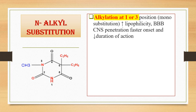First is the N-alkyl substitution. This means substituting the N1 or N3 position in the barbiturate structure with a small alkyl radical such as methyl. Once we substitute these N sites with a methyl group, it causes an increase in the lipophilicity of the barbiturate and increases blood-brain barrier or CNS penetration. Ultimately, this results in a faster onset of action and decreases the duration of action.